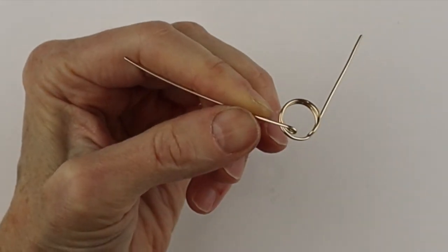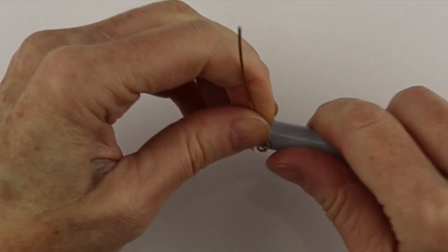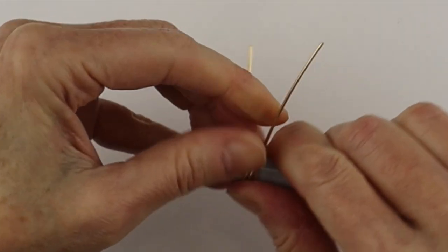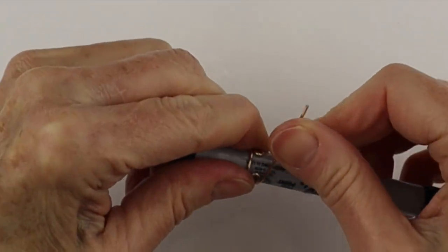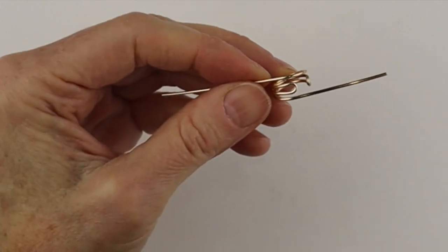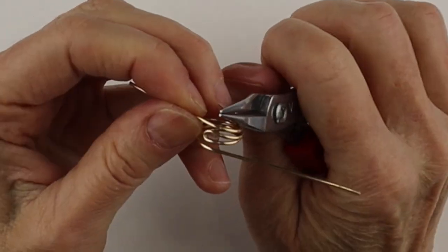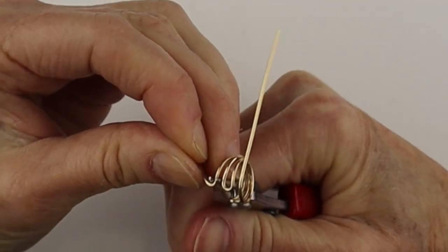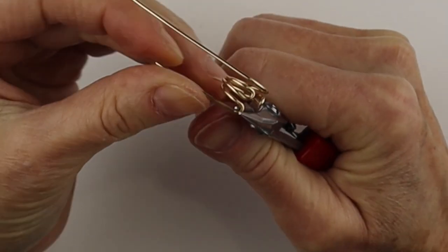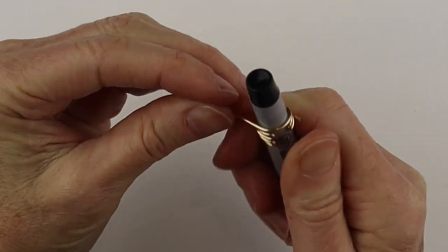So we have it not quite closed there. Put it back on the round form and bring it around. Back to the other side. Remove it. Hold this right under the other one and bring it around. Put that one back in. Bring it around here.